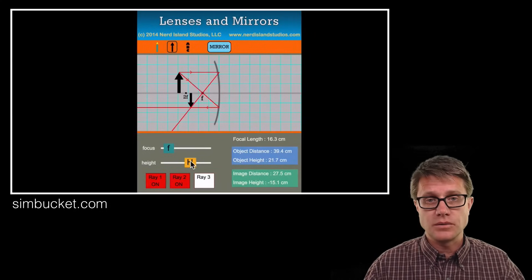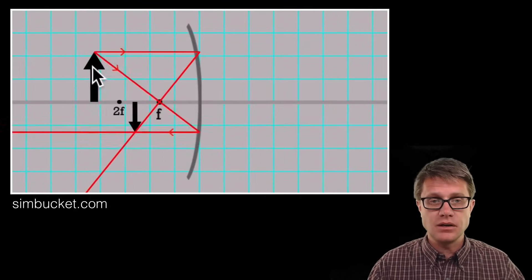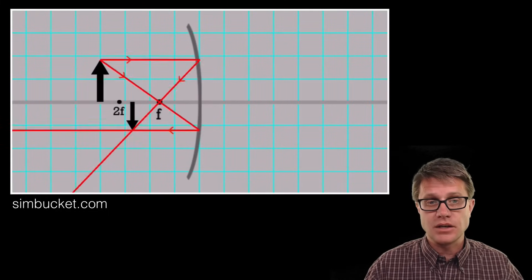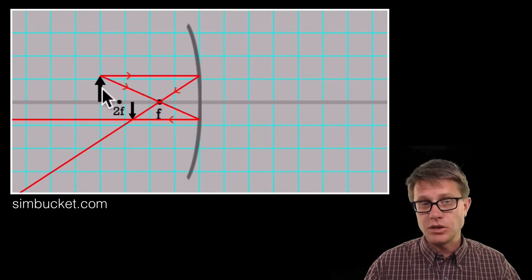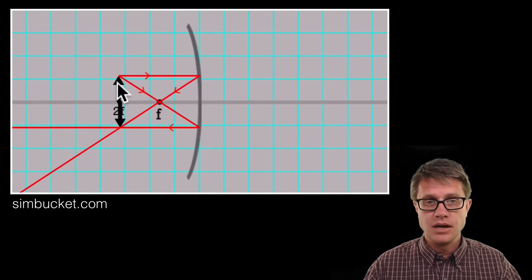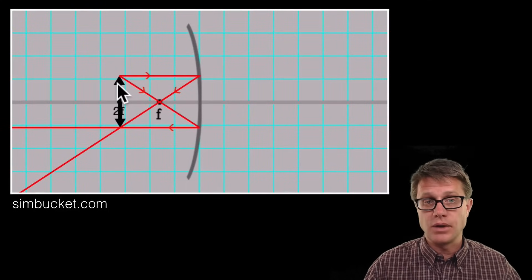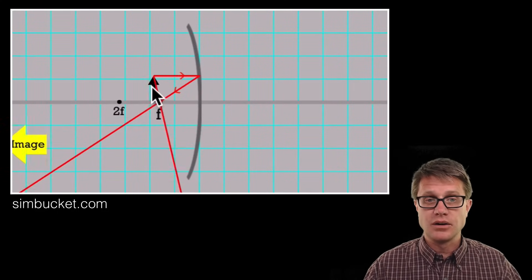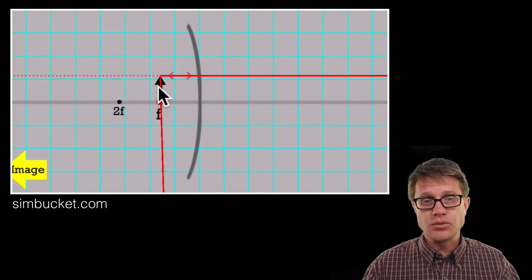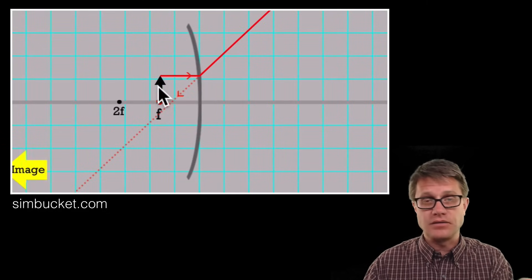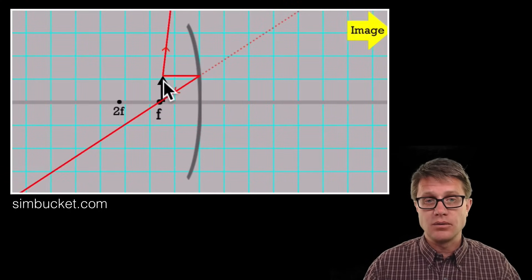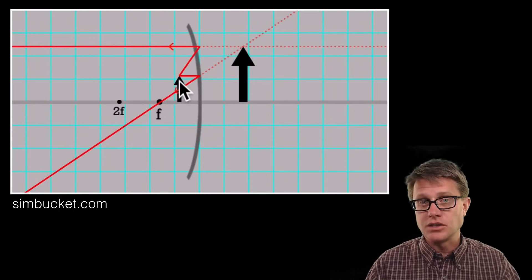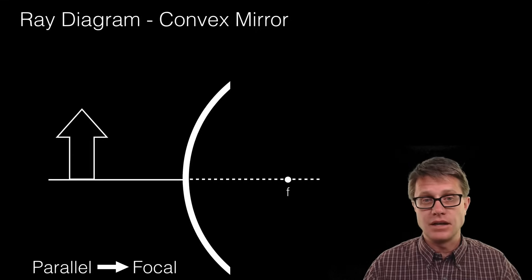Using the Simbucket simulation you can move the object and verify this. As the object moves, there is a real inverted image. At the center of curvature — 2f — the image is upside down and the same size. As you approach the focal length, that image gets bigger and bigger. Once at the focal length the image is not defined, and as you move inside the focal length the image jumps to the virtual side — it is now a virtual image, very large and upright.